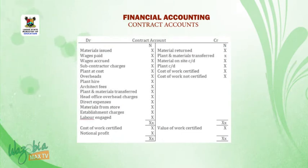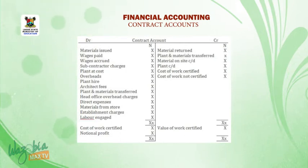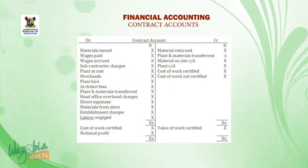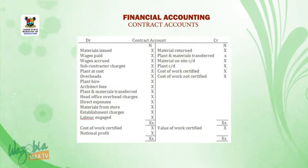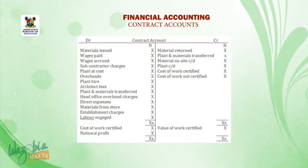The specimen of the contract account. On the debit side: material issued, wages paid, wages accrued, subcontractor charges, plant at cost, overheads, plant hire, architect fees, plant and material transferred, head office overhead charges, direct expenses, material from store, establishment charges, labour engaged. On the credit side: material returned, plant and material transferred, material on site carried down, plant carried down, cost of work certified, cost of work not certified — giving the total. Then, cost of work certified is brought down on the debit side, and value of work certified appears on the credit side. The difference between the two gives us the notional profit.